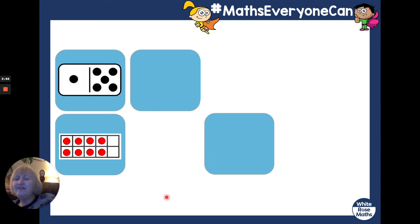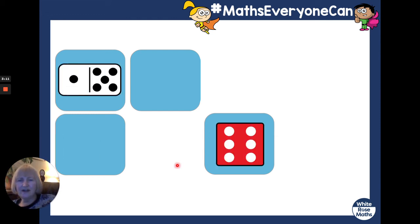Let's try these two cards. Let's do the domino first. So, we've got five over here and one more is six altogether. So, this card is six. And how many is this card showing? One, two, three, four, five, six, seven, eight. Hmm. No, that's not a pair.